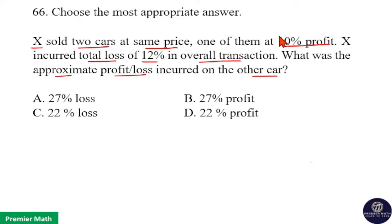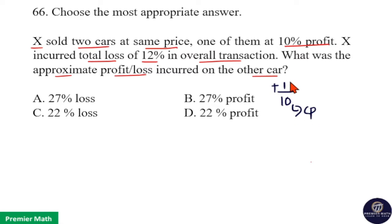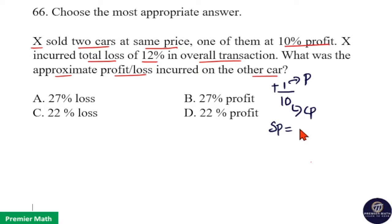X sold one car at 10% profit. 10% means 10/100, that is 1/10. Profit means plus 1/10. Here 10 parts is the cost price and 1 part is the profit. So cost price plus profit equals sell price: 10 plus 1 gives 11 as the sell price for the first car.